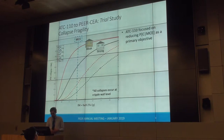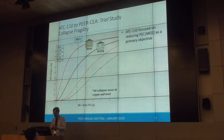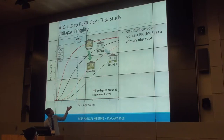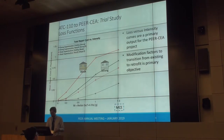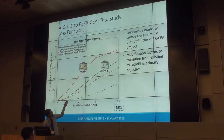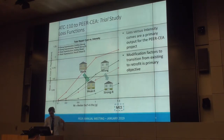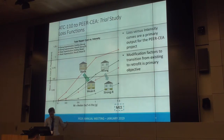Starting from the ATC 110 aspect, we're looking at collapse fragilities, which was the primary objective. You can see the MCE annotated there. Comparing the solid lines to the dashed lines, you can see the effect of the retrofit and the effect on the MCE collapse intensity. Moving to the new PEER CEA project, now we're looking at loss curves — mean repair cost versus intensity measure — where a similar comparison can be made between existing and retrofit. Understanding this change and coming up with modification factors to quantify this transition is the primary objective.